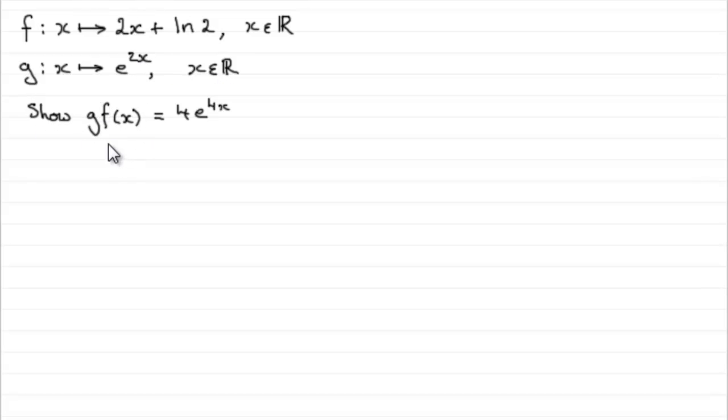And we've got to show that this composite function g f of x is equal to 4 multiplied by e to the power of 4x. So how am I going to do something like this? Well, first of all, I'd write down what we're given, that is g f of x, or what we've got to find anyway.